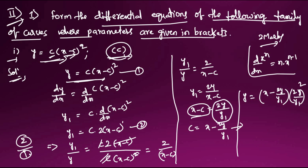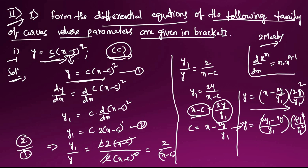Substituting c = x - 2y/y₁ back into the first equation y = c(x-c)²: we get y = (x - 2y/y₁) · (2y/y₁)². Simplifying: y = (x - 2y/y₁) · 4y²/y₁².